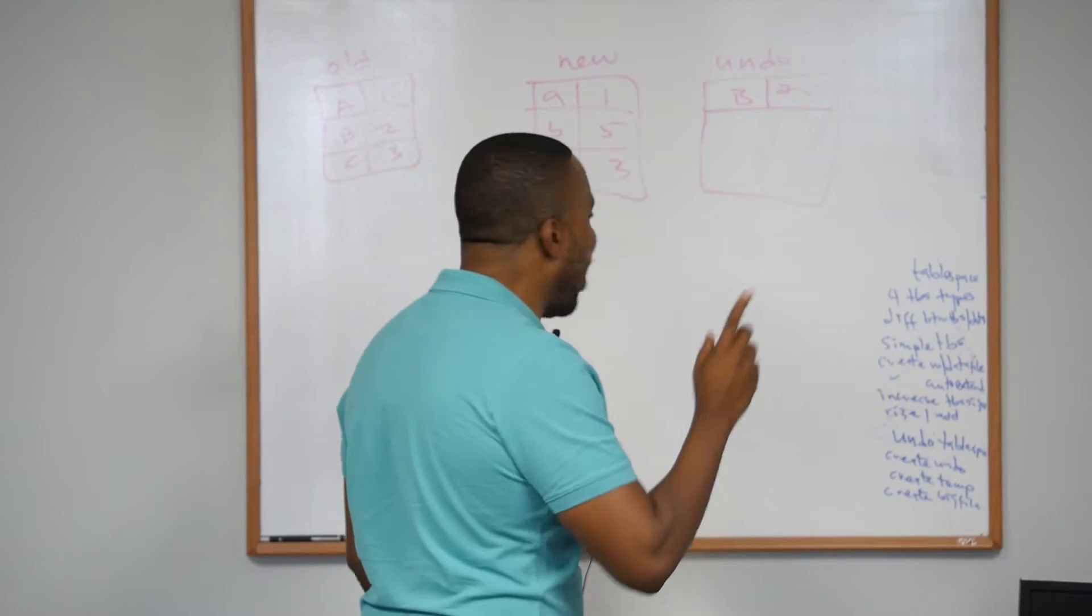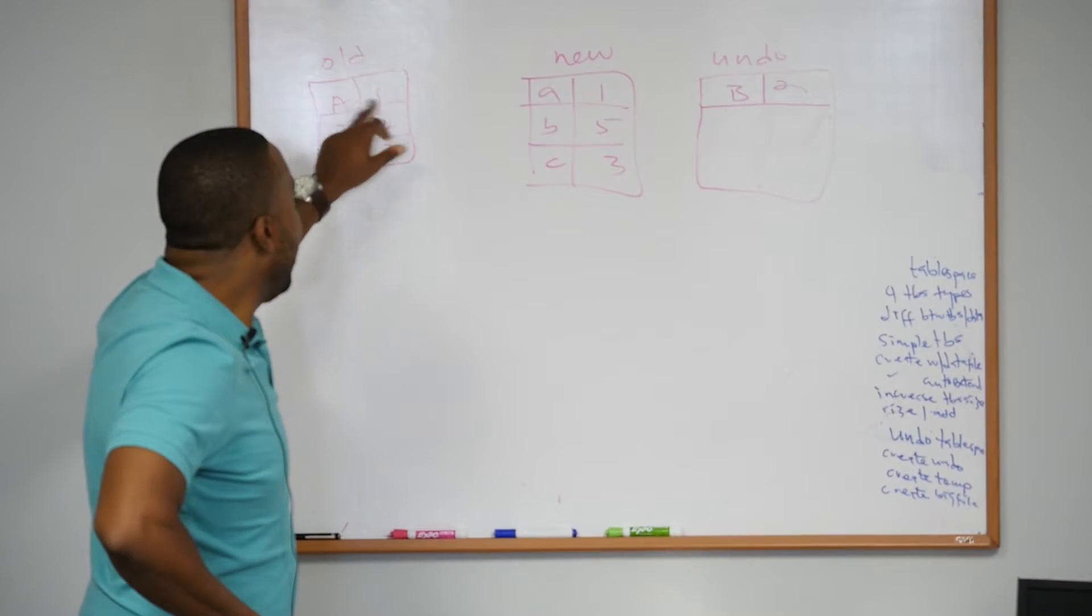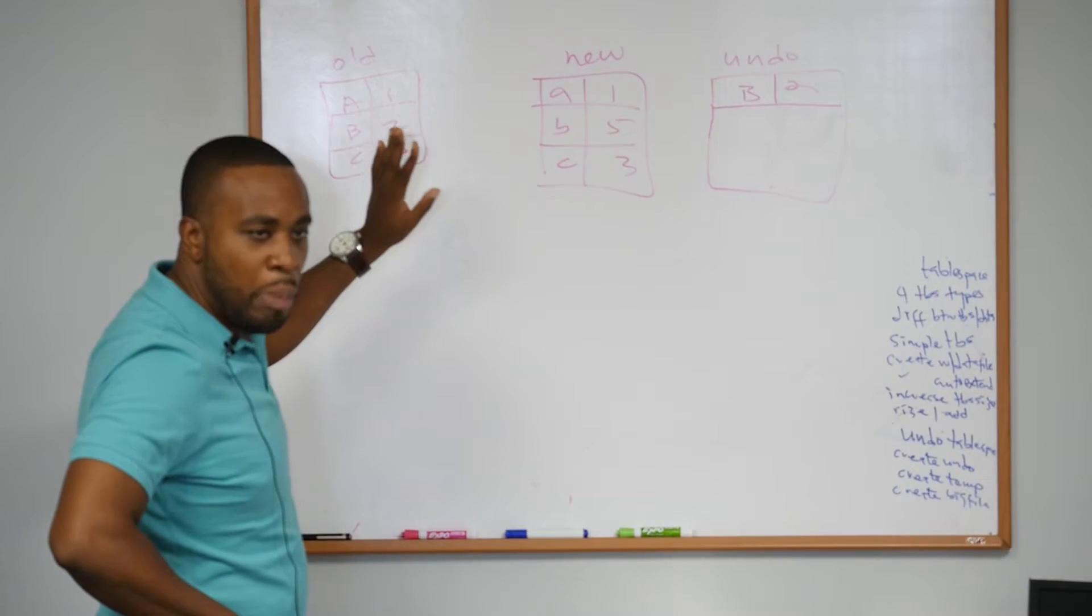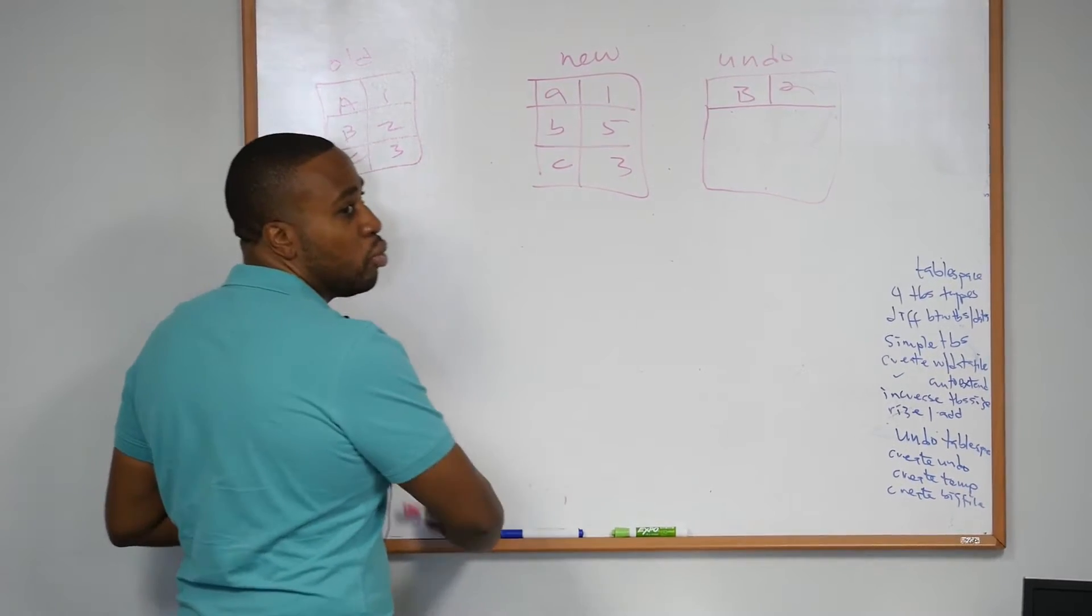What Oracle has to do now is this: This is what the old table looks like—A1, B2, C3, no problem. Now this is what the new table looks like after you did an update. The update statement would probably